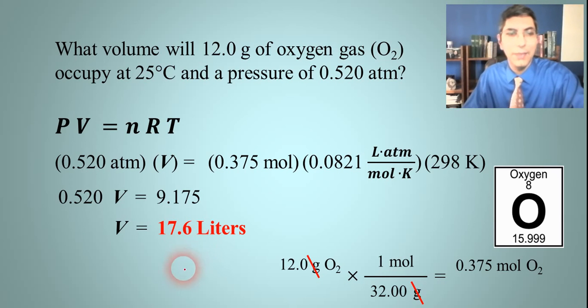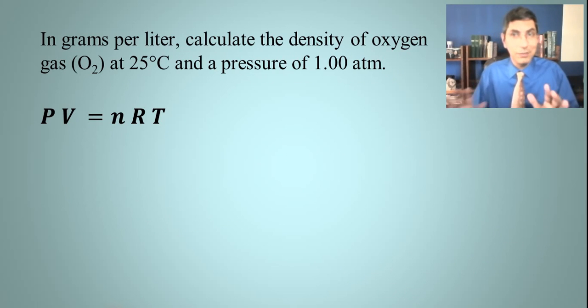What are some other applications of the ideal gas law? Let's say we have something like this - this is a little bit tougher and something that we sometimes see on the AP exam. It says: in grams per liter, calculate the density of oxygen gas O2 at 25 degrees Celsius and a pressure of 1.00 atmospheres. How do we do that? We don't have a whole lot of numbers to work with - just two numbers and several slots to fill in our equation.